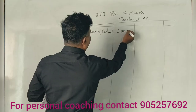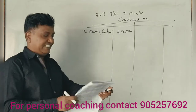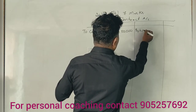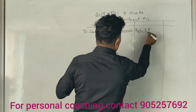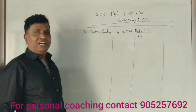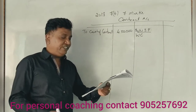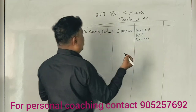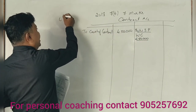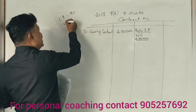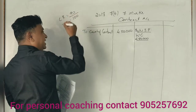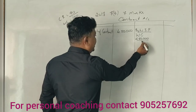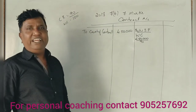The cost of contract is 4,50,000 rupees. Now, work certified and work in progress: the cash received is 4,50,000 rupees. If you have 100 rupees work certified, the cash received is 90 rupees — meaning cash received equals 90% of work certified.